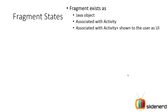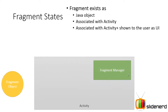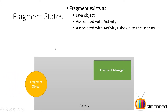First, talking about fragment states — a fragment object can exist in three different states. When you see 'Fragment f = new Fragment()', it exists as a simple Java object, just like any other object you create in Java. But at this point, the fragment manager is not aware of this object.